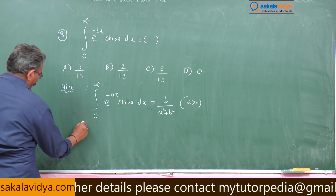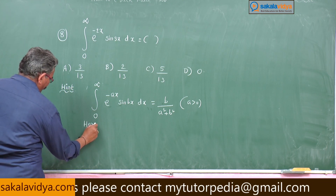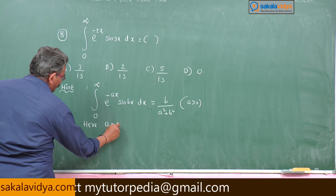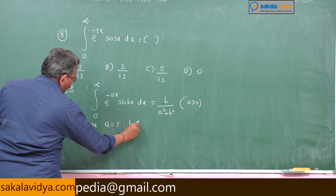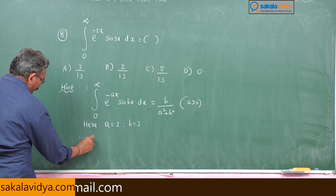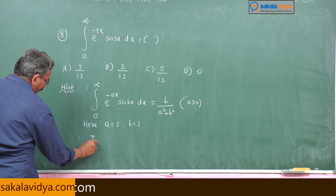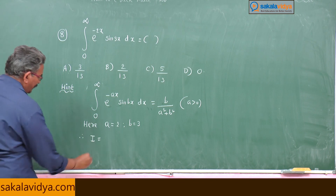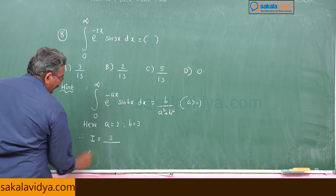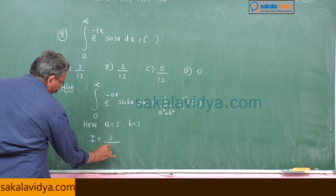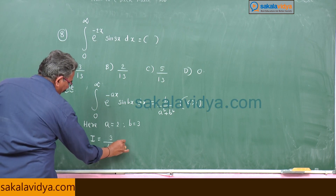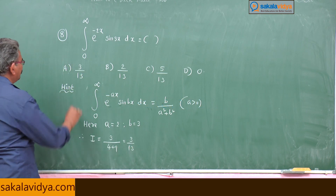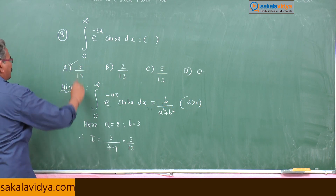In this problem, A = 2 and B = 3. Therefore the required integral I = B / (A² + B²) = 3 / (4 + 9) = 3/13. The first option is the correct answer.